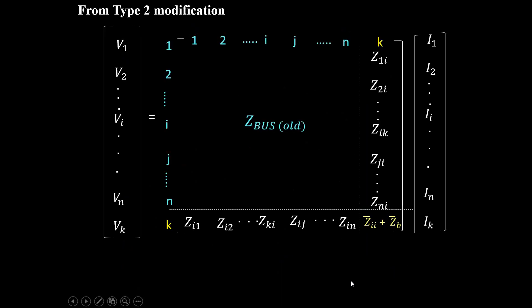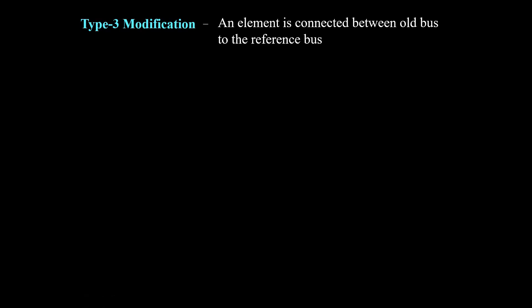Continuing from this, we have an expression with respect to the kth bus, that is my newly added bus. We are going to use this to explain the type 3 modification. Type 3 modification — whenever we connect an element, which is nothing but a transmission line, between an old bus and the reference bus, that kind of modification is called a type 3 modification.